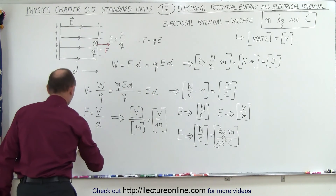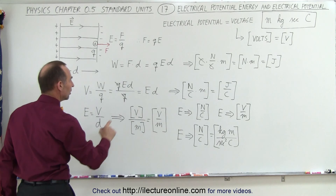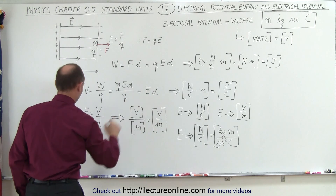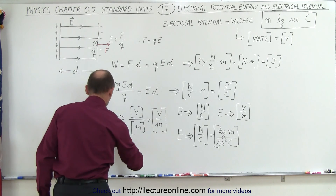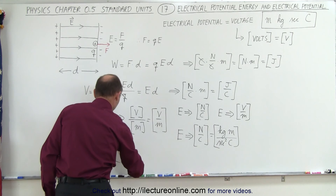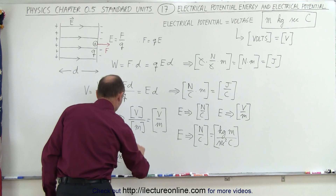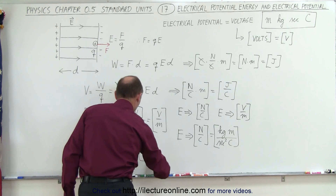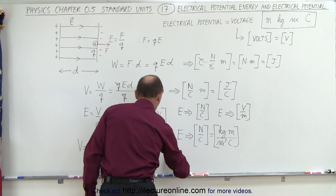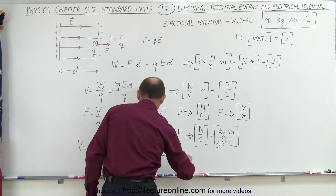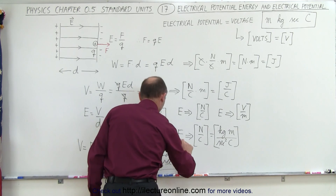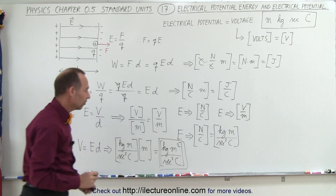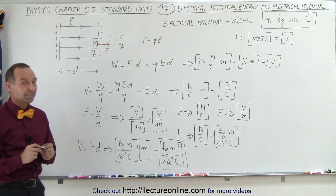Now let's do the same for voltage. Voltage equals electric field times distance, so the units are: electric field is kilograms times meters divided by seconds squared times coulombs, and then multiplying by meters, we see that voltage is expressed in units of kilograms times meters squared, per second squared times coulombs. These are the basic SI units of voltage, while those are the units of electric field — and that's how we know they differ by just a factor of meters.